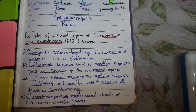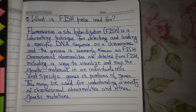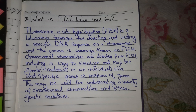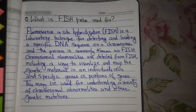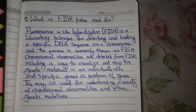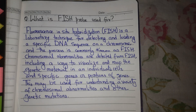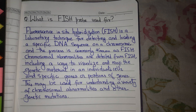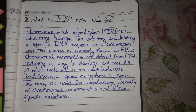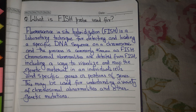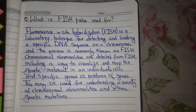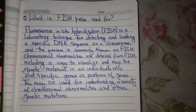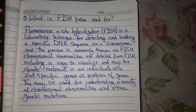Now, what is a FISH probe used for? It is used as a laboratory technique for detecting and locating a specific gene sequence on a chromosome — a process commonly known as FISH. Chromosomal abnormalities are detected using FISH, including visualizing and mapping the genetic material in an individual's cells, specific genes, or portions of genes. This may be used for understanding a variety of chromosomal abnormalities and other genetic mutations.